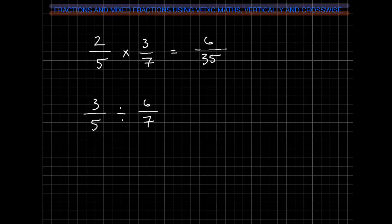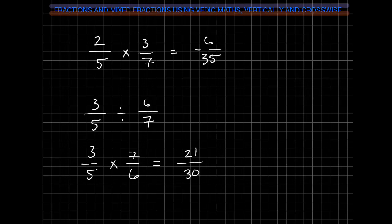The next operation is dividing fractions. To divide fractions, first you have to invert the second fraction and change the division to a multiplication sign. So here we have 3 over 5 times 7 over 6, and then just go as normal. So 3 times 7 is 21, and 5 times 6 is 30. So our final answer is 21 over 30.